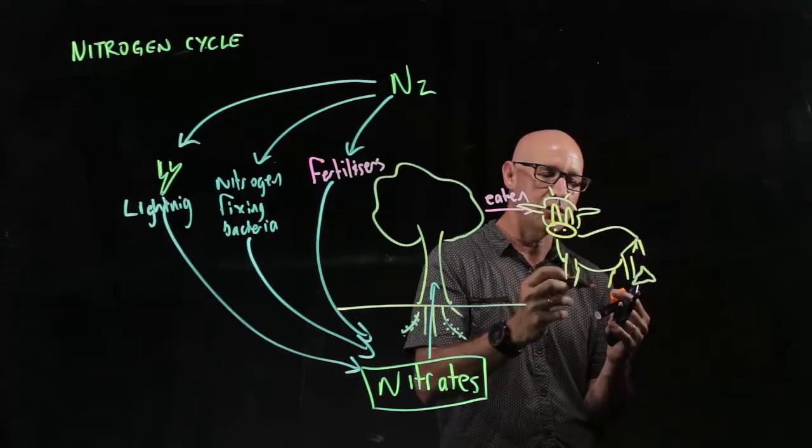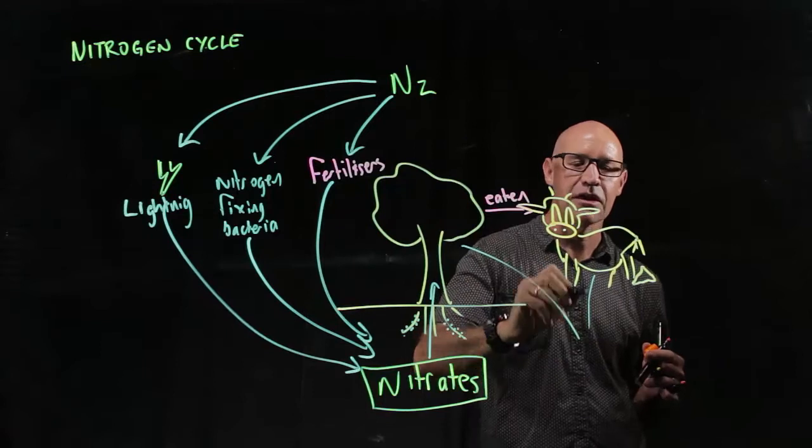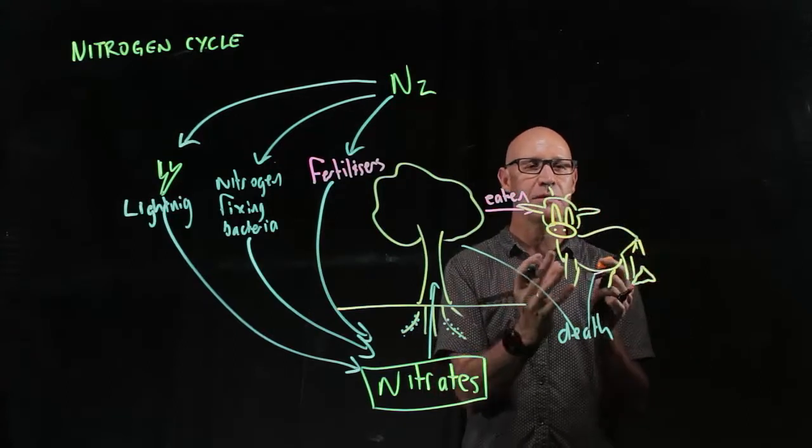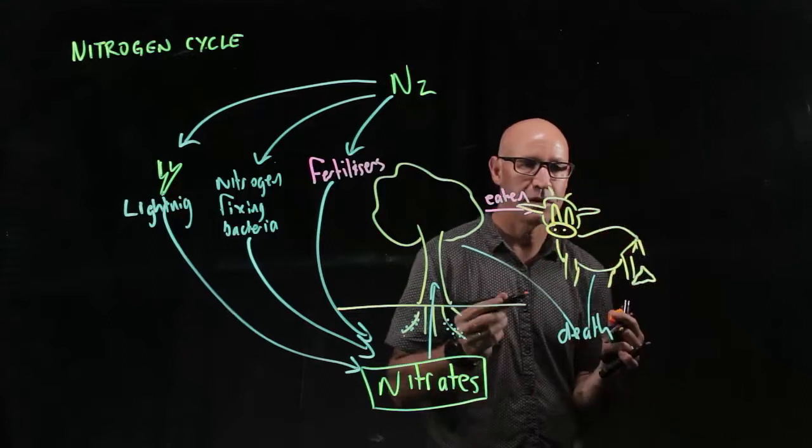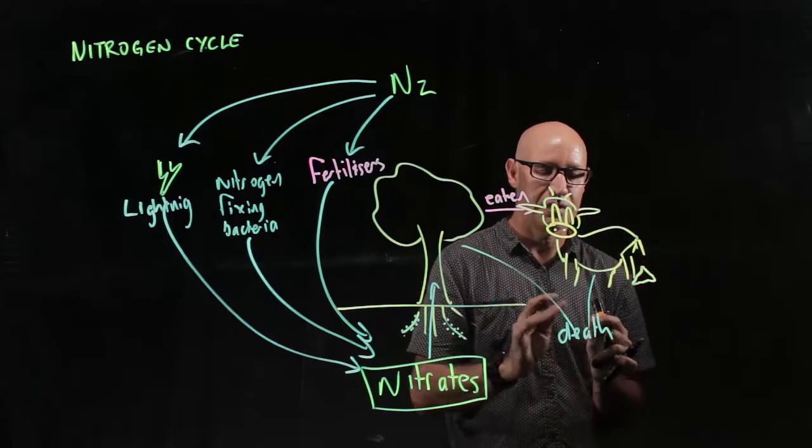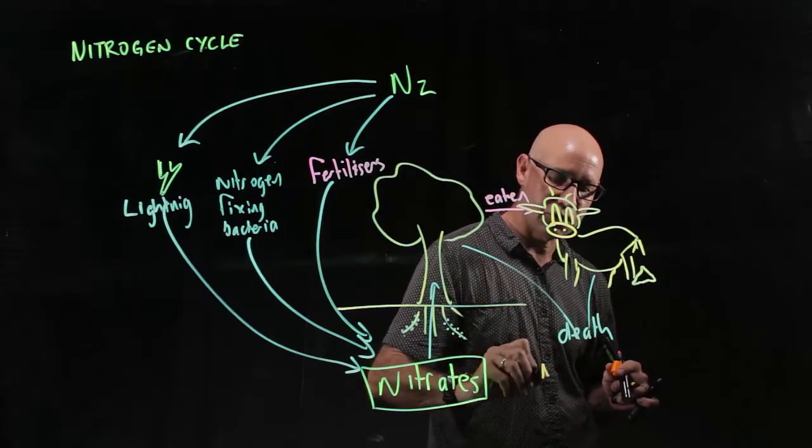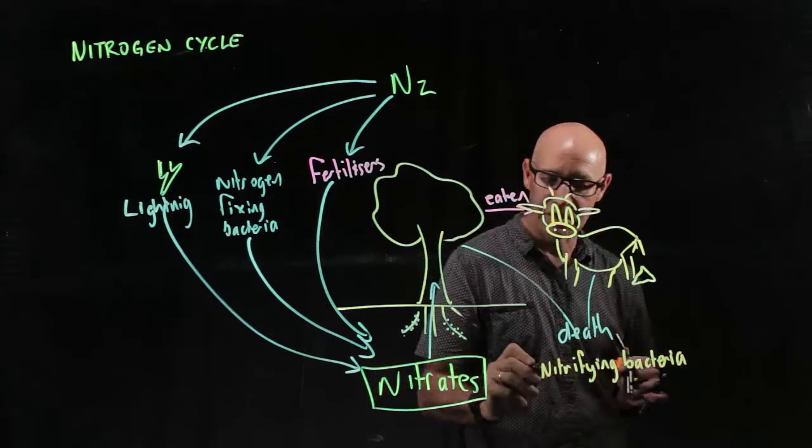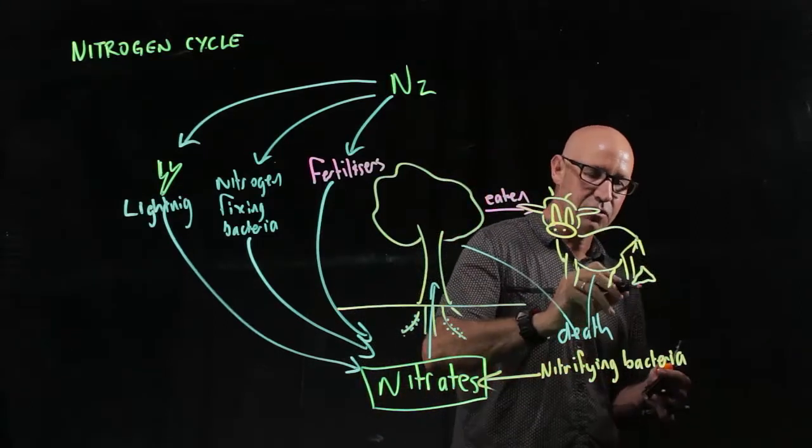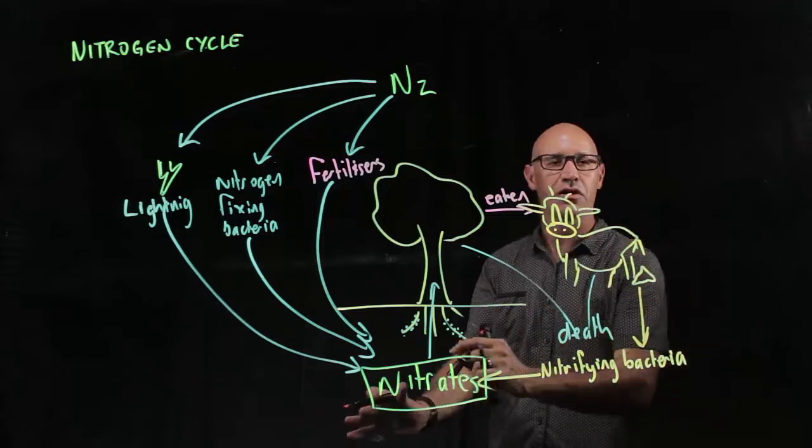And also when the animals die, so when all organisms die, so we're talking about the death of plants and the death of animals. So we have this dead or detritus, dead matter that still contains a whole heap of nitrogen in the form of nitrates. So luckily we have bacteria that decompose the detritus, the dead organic matter to release the nitrates back into the soil and they're called nitrifying bacteria. They decompose detritus putting nitrates back into the soil and of course they do the same thing with that nitrogen rich waste product as well. So they're able to break that down releasing the nitrogen back into the soil.